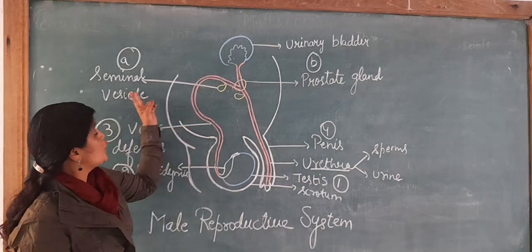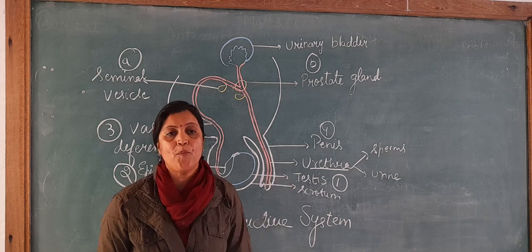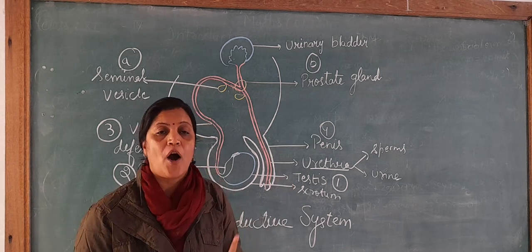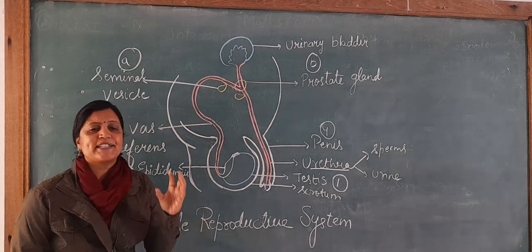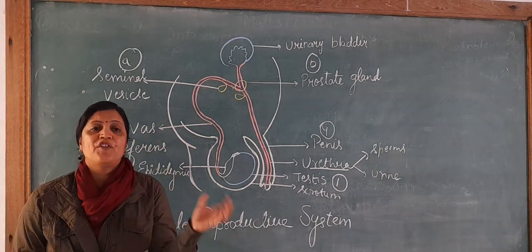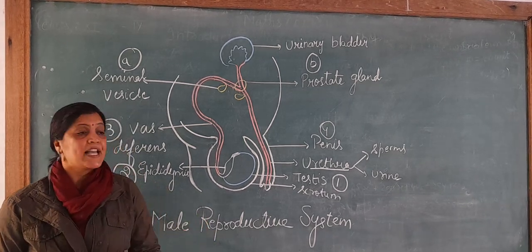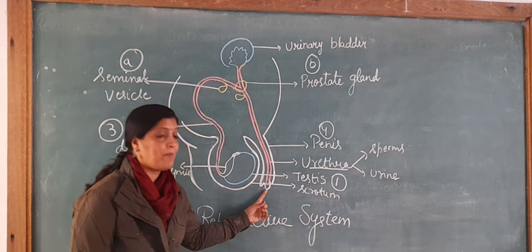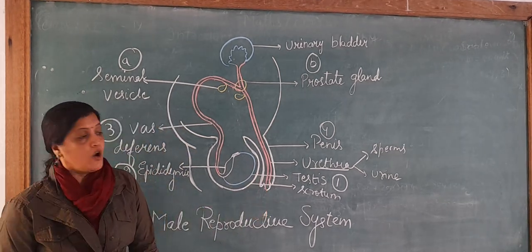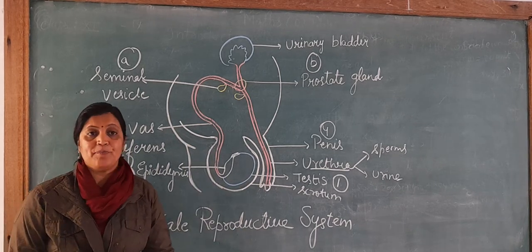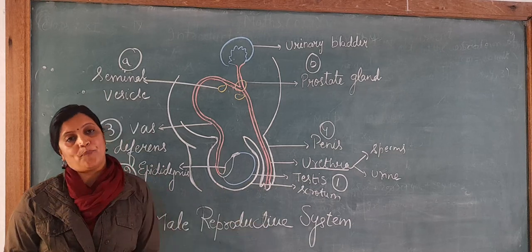Along with these two glands, one more gland is present in the male reproductive system — the Cowper's gland. The Cowper's gland secretes a fluid along with a mucus — a sticky mucus substance. This mucus lubricates the penis tip at the time of copulation.